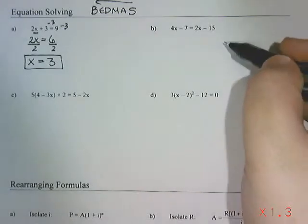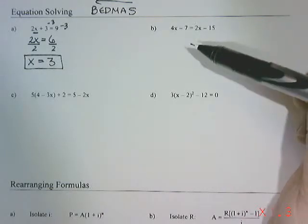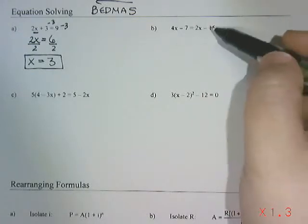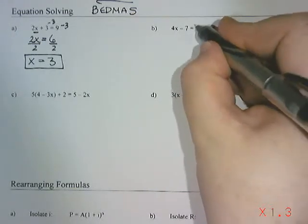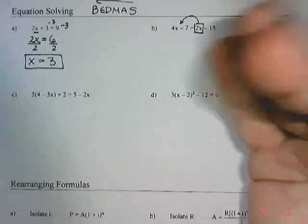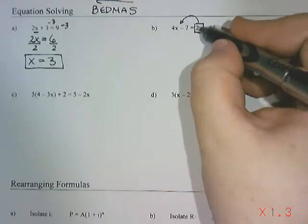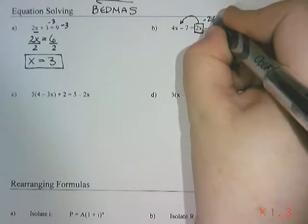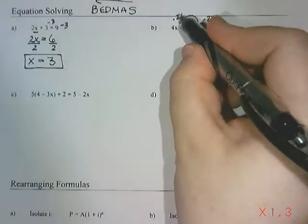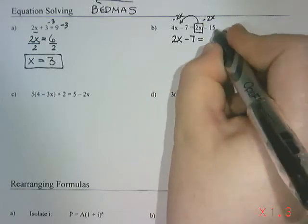All right, the second one is a little trickier because it doesn't just have one term with an x, it actually has two terms with x, and they're on opposite sides of the equal sign. So what I would like to do is get all of the x's onto one side. So I would probably bring this 2x over to the other side so that all of the x's are on the same side together. Now to get that 2x to the other side, it is a positive 2x. So we would take away 2x from both sides to make that move happen. So 4x take away 2x is 2x. I still have that minus 7, and it equals negative 15.